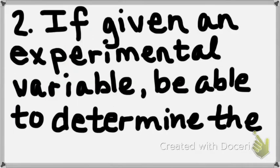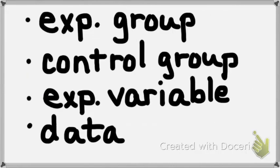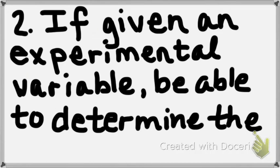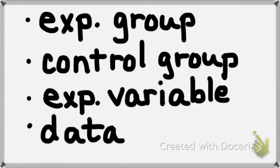Given an experimental variable, be able to determine the experimental group, control group, experimental variable, and the data. One day in class I asked you to design an experiment to see if diet affected the color of shrimp. The experimental variable was the diet we gave the shrimp. The control group was the group of shrimp that ate the regular shrimp food called shrimp chow — we knew what color they were going to become.